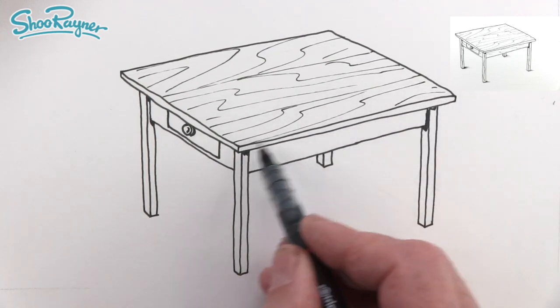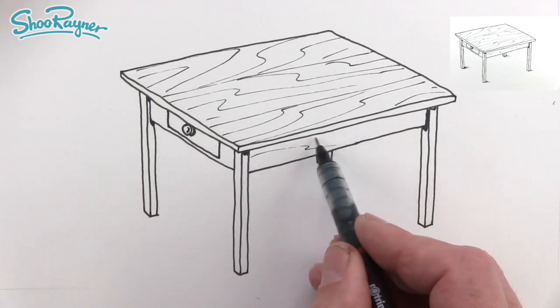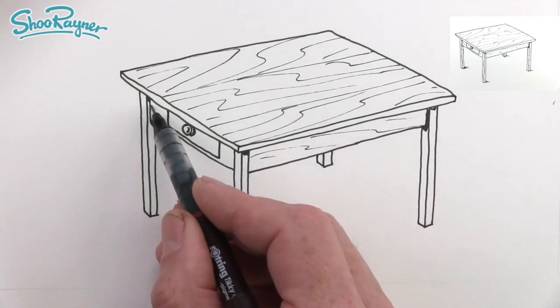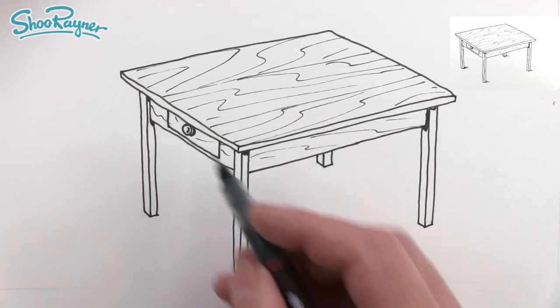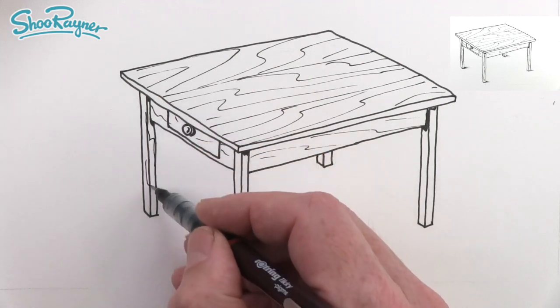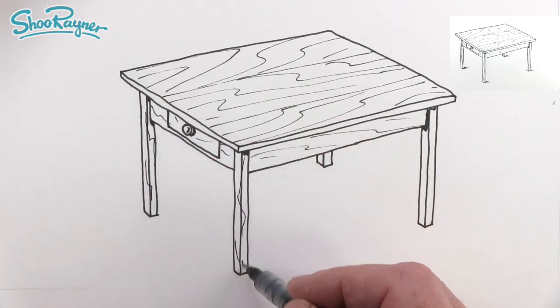Like that, and then we can maybe have some on the side panels there going through on the drawer, and maybe there'd be something on the legs so draw that in very lightly.